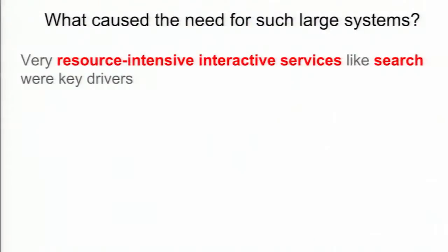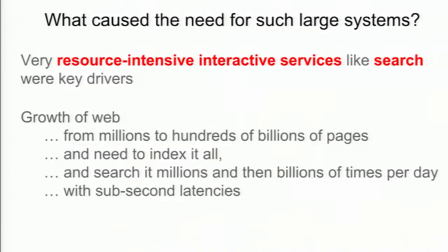What caused the need for these really large-scale systems? I contend that one of the first publicly available incredibly large datasets was the web. The ability to have this large dataset with looser consistency requirements than many other large data problems was a key driver. The web grew from millions to hundreds of billions of pages, and you needed to index it all and search it really fast — which requires parallelism across a very large number of computers.